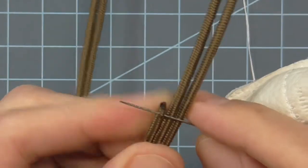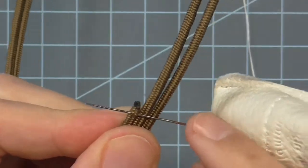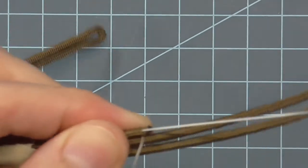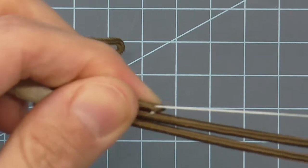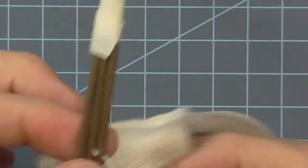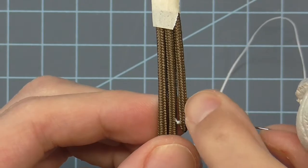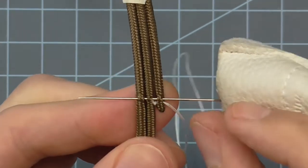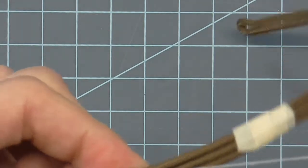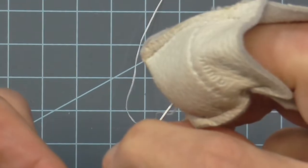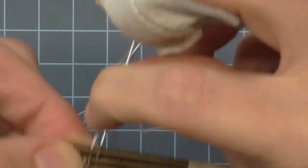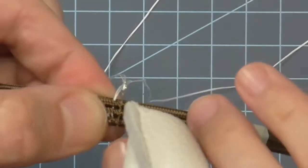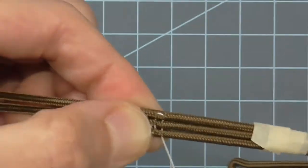Thread your needle. If using regular sewing thread, double it. Knot the end and secure it to the short end of the wire. Go past the knot about a sixteenth of an inch, then run the needle through all three layers of paracord and wire. Continue doing this all the way up the distance of the overlapped wires.